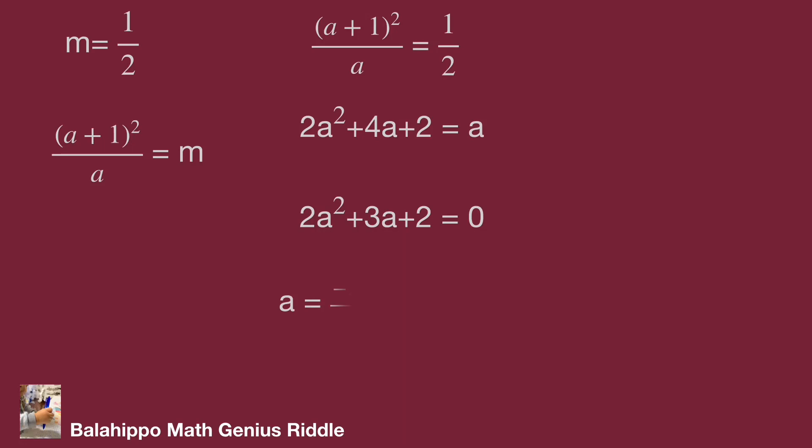Use the formula. We get a equal to (-3 ± √(9 - 4 × 2 × 2)) over 4. The value of a shows that there is no real root in a. So this answer is false.